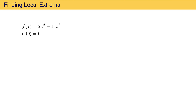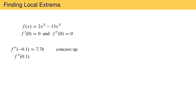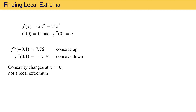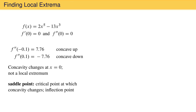Our example function has a critical point at x equal to zero, but the second derivative test is inconclusive because the second derivative at zero is neither positive nor negative. To determine if the point x equals zero is a local minimum, maximum, or neither, we need to investigate the concavity on both sides of and close to the critical point. The second derivative at minus 0.1 is positive 7.76, which means the function is concave up to the left of the critical point. The second derivative at x equals positive 0.1 is negative 7.76, indicating the function is concave down to the right of the critical point. From this we can conclude that the concavity changes at x equal to zero. If the concavity changes at a critical point, it is not a local minimum or maximum — it is instead called a saddle point. Saddle points are inflection points that are also critical points.